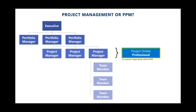In a simplified organizational structure you have an executive — a CFO or VP — then portfolio managers overseeing lines of business, then individual project managers who might be managing one or a handful of projects like new product development, and then the resources — staff under them. Project management is what you see at the project manager level, and our product Project Online Professional can operate independently without full PPM.